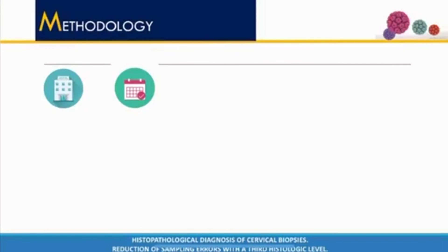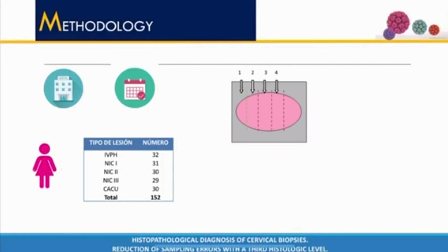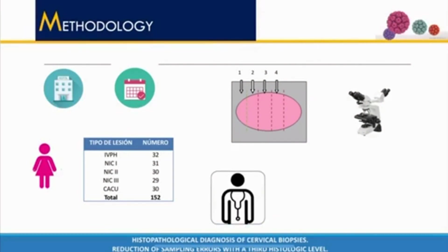It is a quantitative and retrospective study. We conducted our study in a second-level healthcare hospital, taking paraffin blocks from women with a cervical lesion from the year 2014. The sample size was 152 paraffin blocks. The sampling was non-probabilistic and stratified by the different lesions of the cervix. Three cuts were made in each paraffin block in addition to the first one previously made by the institution, and subsequently processed and examined under a microscope. The cuts were reviewed by a second pathologist as a gold standard.